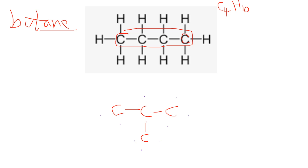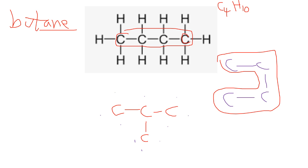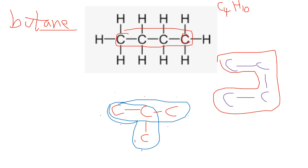To work out the name, you need to find the longest chain — it doesn't have to be in a straight line. For example, butane could be drawn at a weird angle and the longest line of carbons would still be butane. Check all possible routes and find the longest amount of carbons in a line; it doesn't have to be straight.